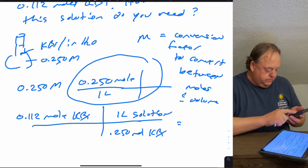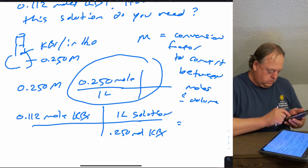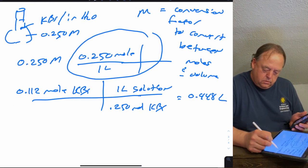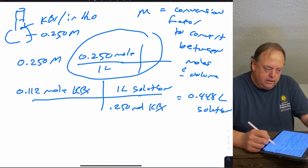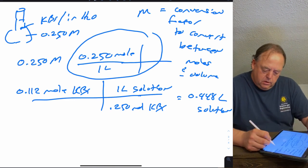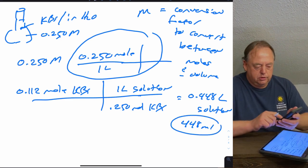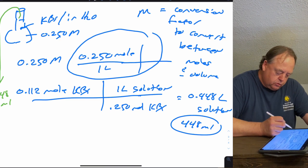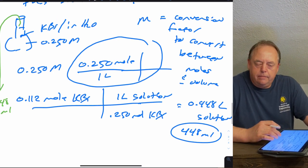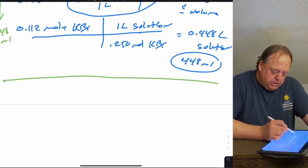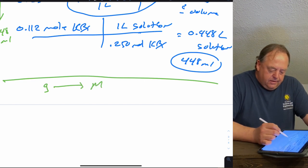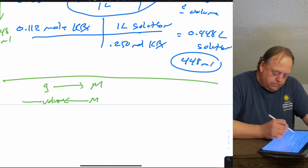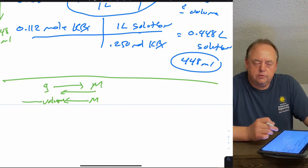Calculate 0.112 divided by 0.250 and you need 0.448 liters of solution, or 448 mL. If you pipette out 448 mL of that solution it will contain 0.112 moles of KBr. You should be able to work both ways: convert grams to molarity, or convert molarity back to volume or back to grams.